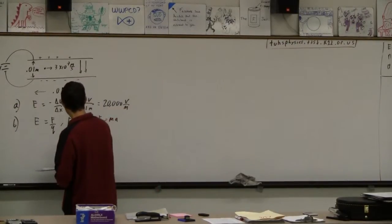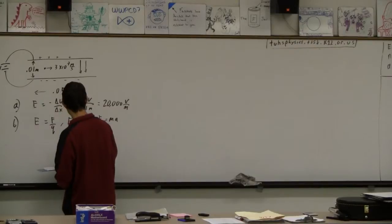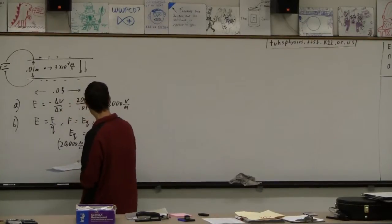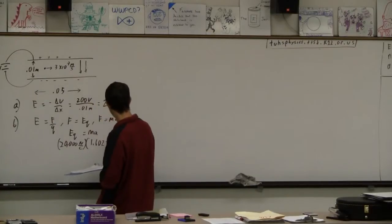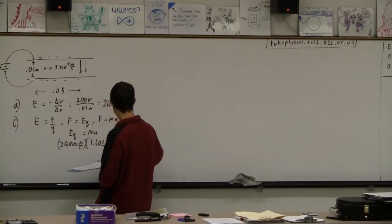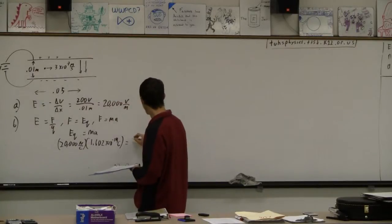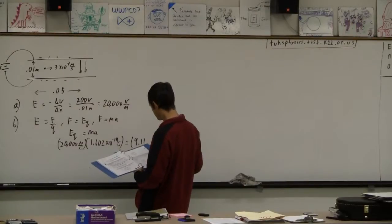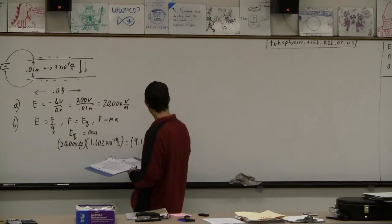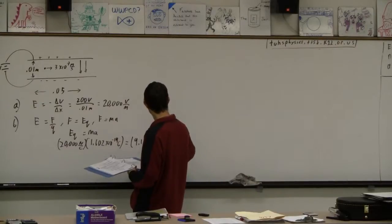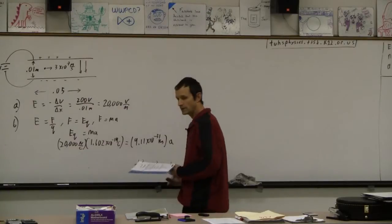The electric field is 20,000, and that's also newtons per coulomb. An electron has a charge of 1.602 times 10 to the minus 19th coulombs. And then that equals the mass of the electron. You've got to look that up. It's 9.11, they must have that in some table, times 10 to the minus 31st kilograms. And then we can find the acceleration.